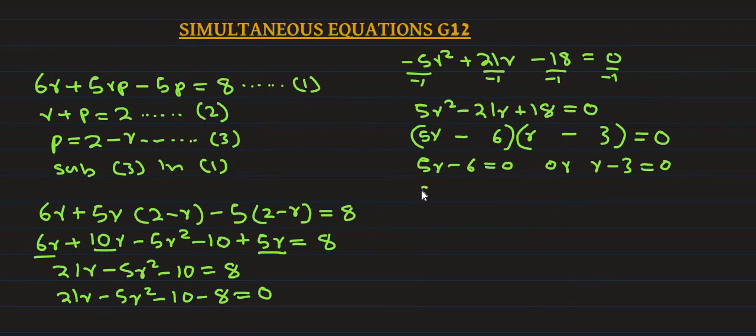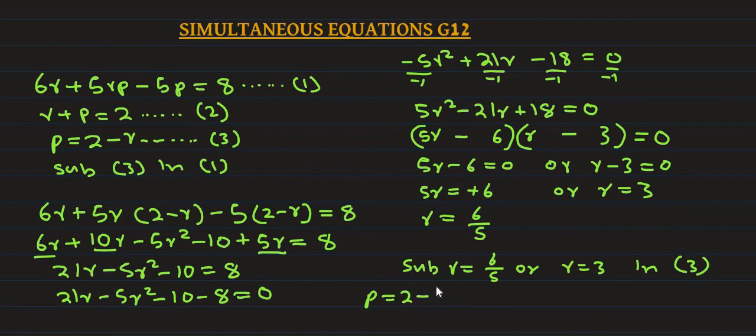I will solve for r. From 5r equals 6, we get r equals 6 over 5. From r minus 3 equals 0, we get r equals 3. So r equals 6/5 or r equals 3. Now we substitute these values into equation 3.